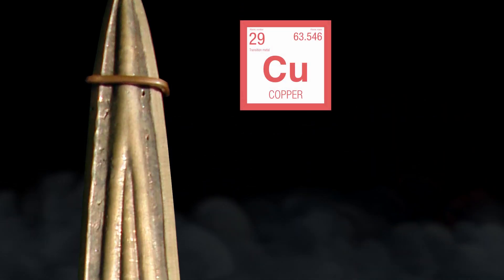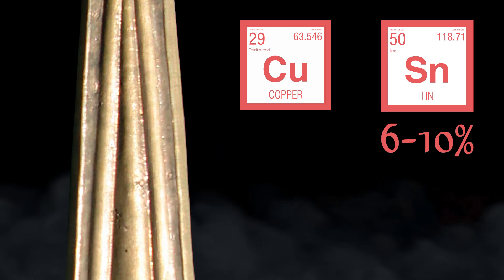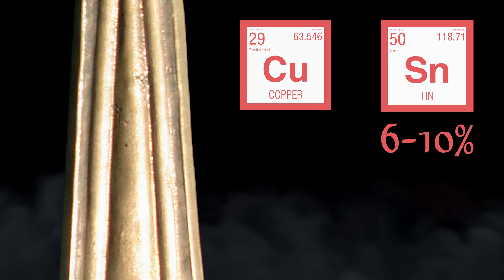Bronze is an alloy, meaning it is a material made of multiple metals, and ancient bronze was copper with around 6-10% tin mixed in. This made the material much stronger than copper or tin on their own.